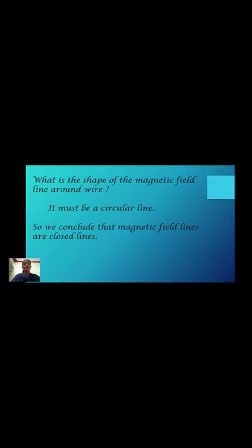What is the shape of the magnetic field line around the wire? It must be a circular line. So we conclude that magnetic field lines are closed lines.